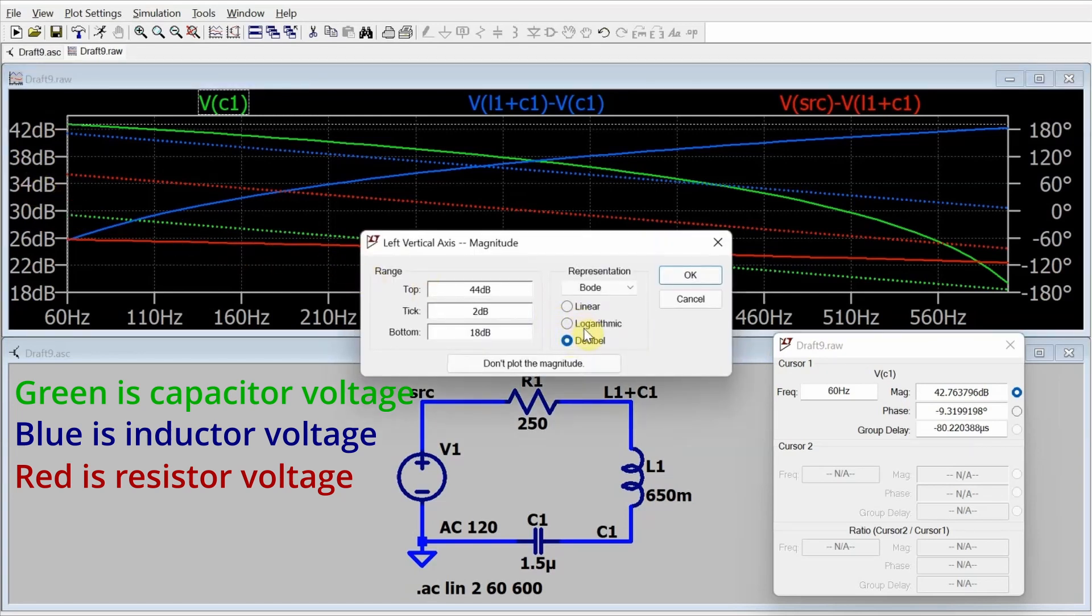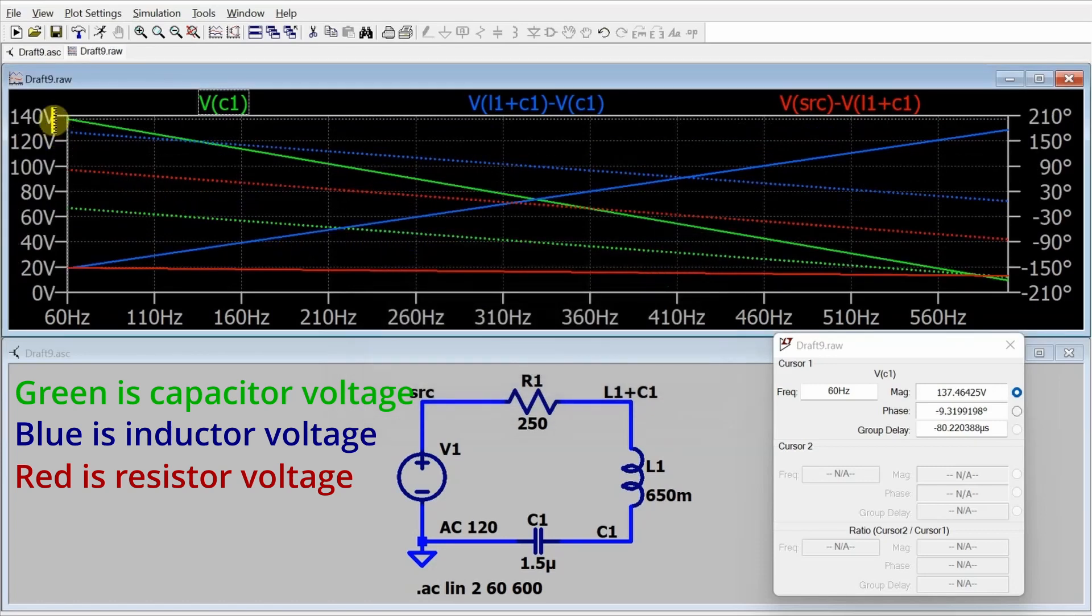If I go into linear and click OK, you can see that it's changed to voltage. And now my reading here for VC1 at 60 hertz gives me the value in volts. So it's 137.46425 volts with a phase angle of negative 9.32 degrees.